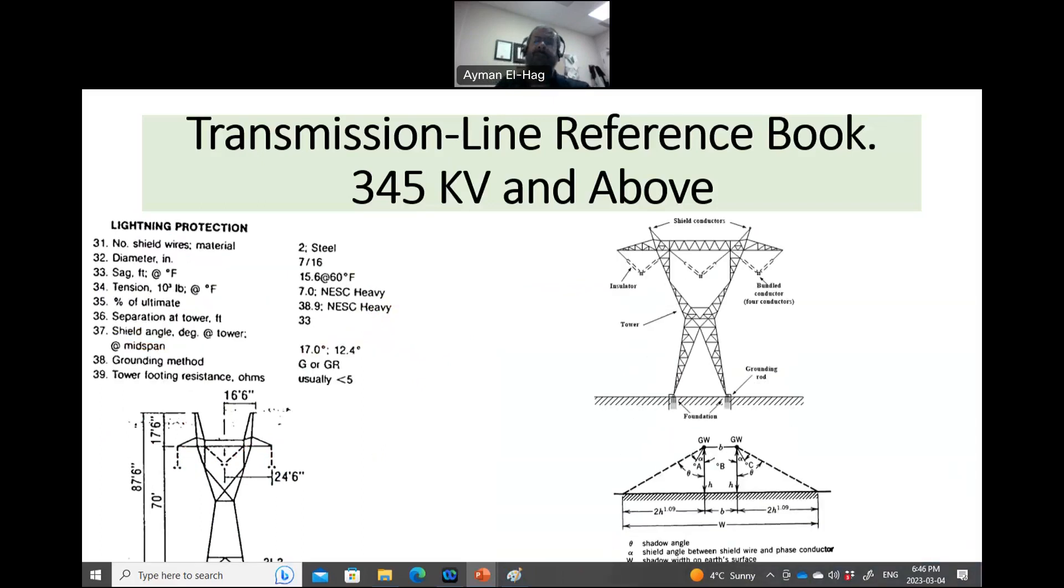Then the lightning protection, and this is something very important. Because as we know, those overhead lines span very long distances. Now, if a lightning hits, we don't want the lightning to go directly and hit the conductors. Otherwise, that will cause, could cause, damage or a failure of the power system. So we have shield wires on top of the lattice structure, or the tower, generally speaking. So here the number of shield wires is two. And that's information specifically for this tower. You can see here, one and two. You look here, this is another tower, one and two. So we have two shielding, shield wires on top.